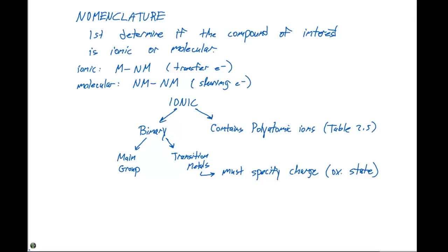So we have to specify which charge they have. If we're looking at binary nomenclature, binary meaning you have a cation and an anion, we're gonna name this by listing the metal name first, plus the anion with an -ide suffix.